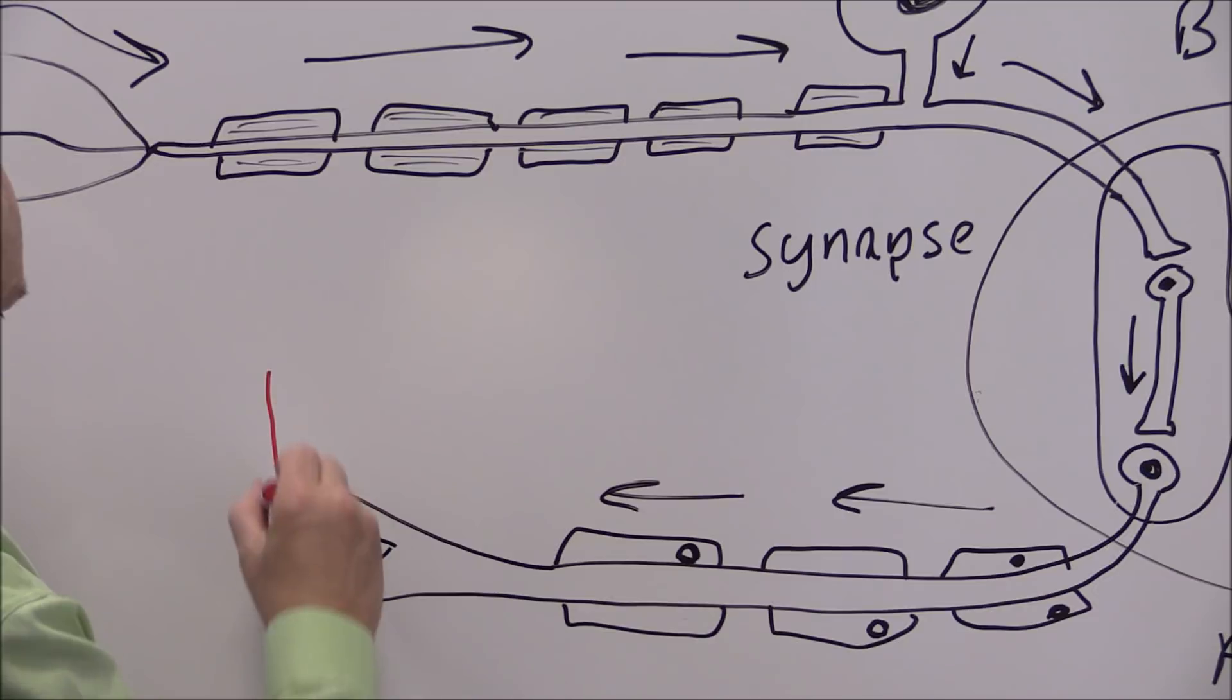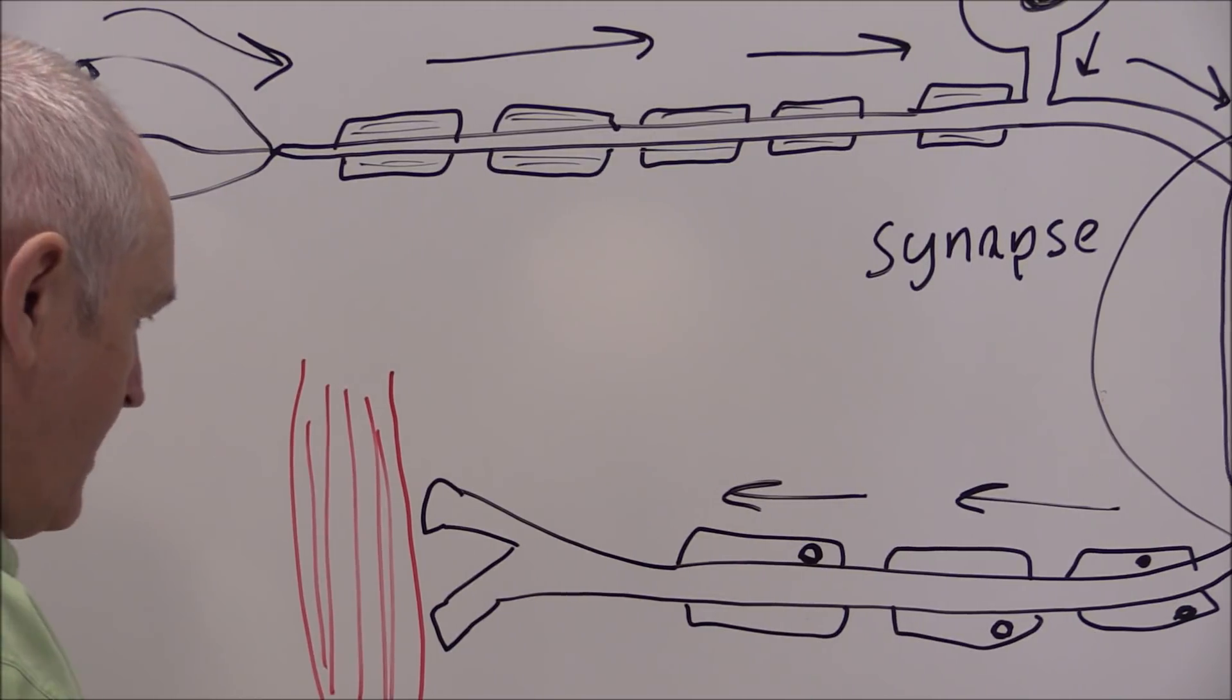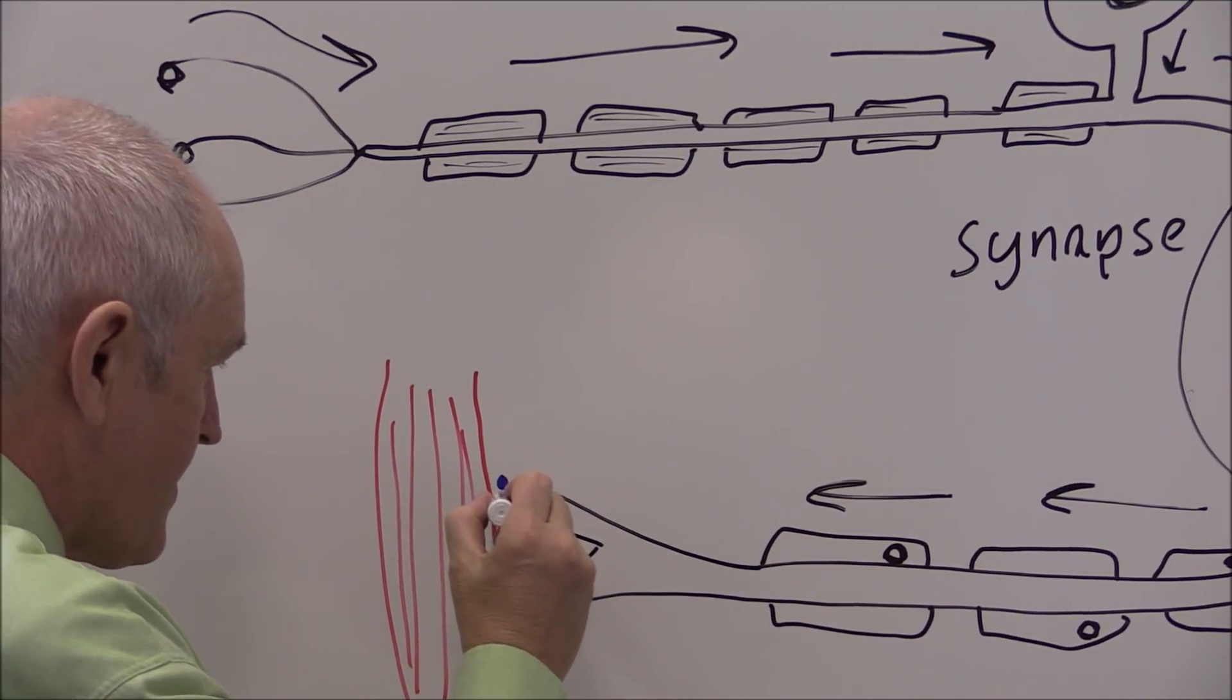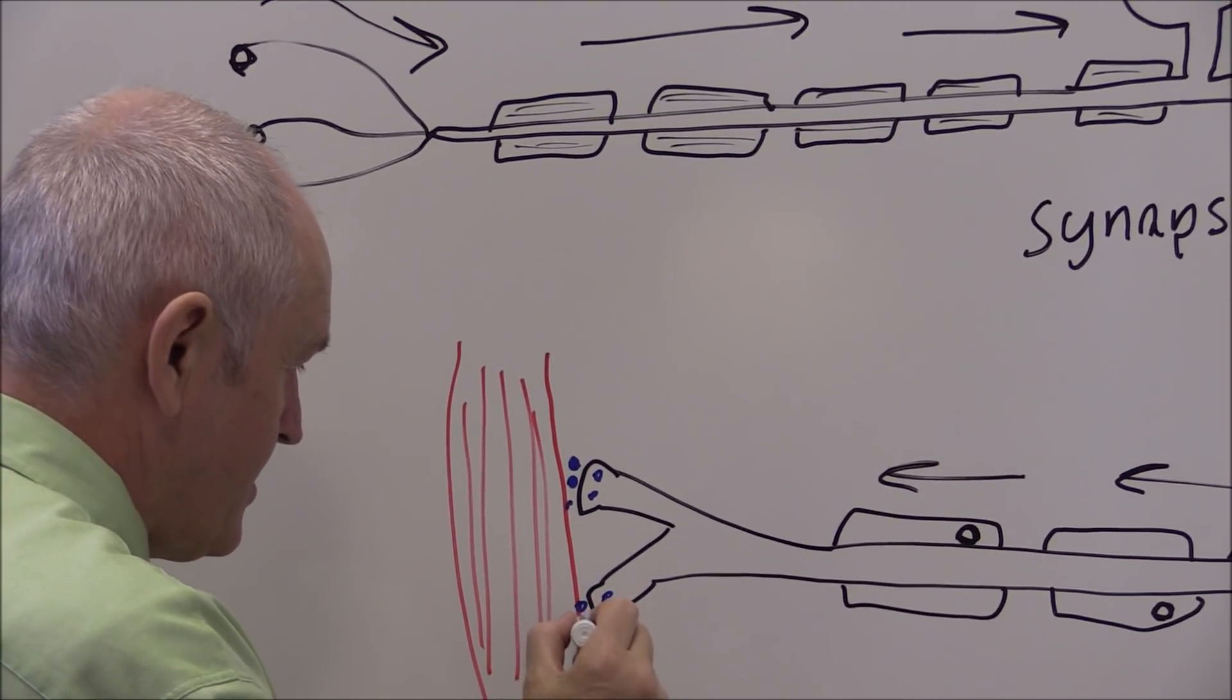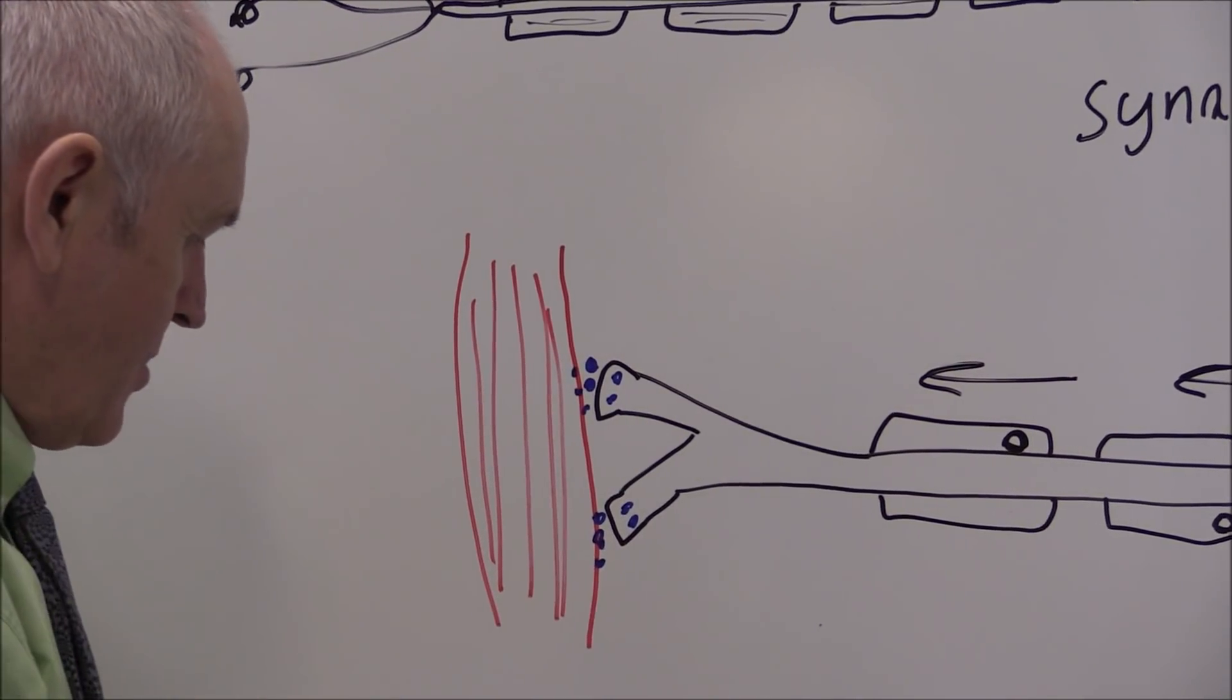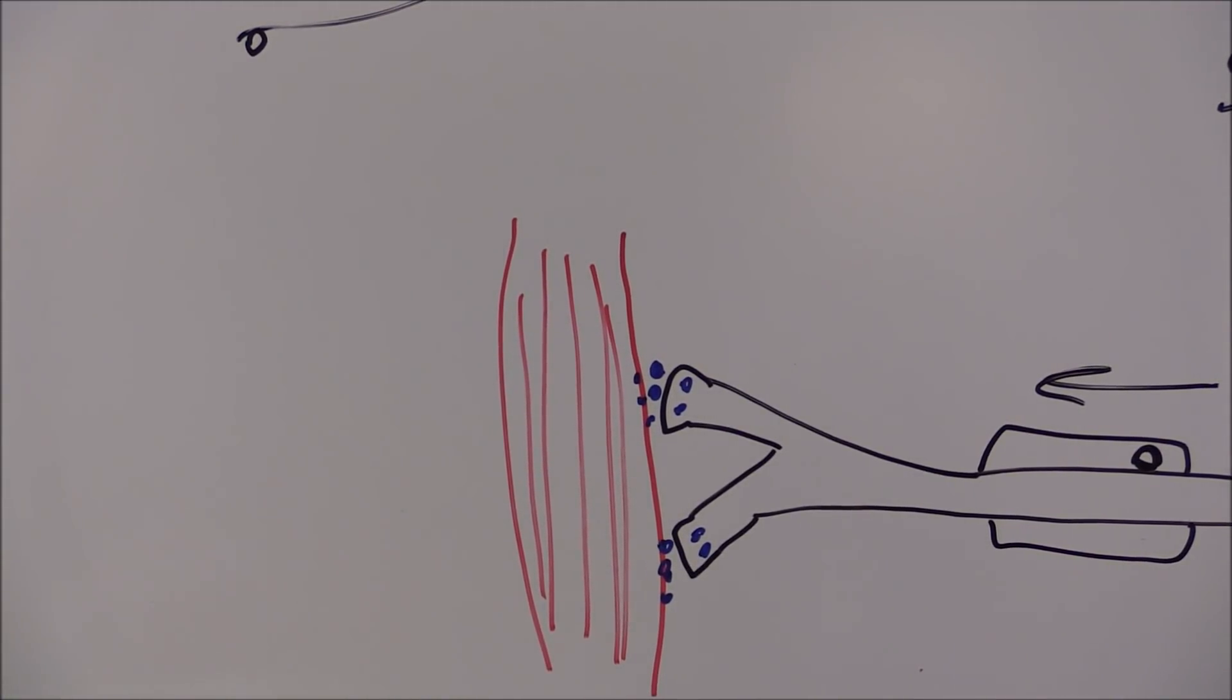The motor neuron of course is going to terminate in a muscle. So here's a skeletal muscle. When the acetylcholine is released from the motor end bulbs of the motor neuron, that will diffuse across onto the surface of the muscle, causing the muscle to depolarize, therefore causing the muscle to contract.